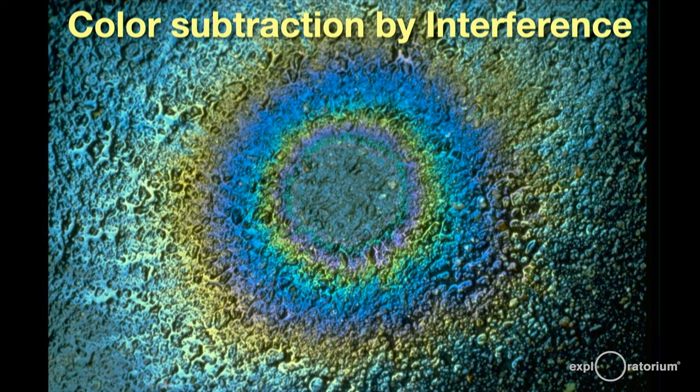The same colors are seen on the street after a rain. A drop of oil or gasoline creates a bubble-thin layer on the pavement, resulting in beautiful subtractive interference colors.